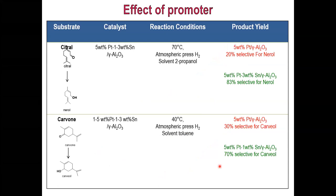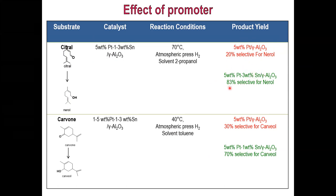This is an example of the promoter effect: in the conversion of citral to nerol, the catalyst is platinum with tin on alumina. Using only platinum on alumina gives only 20% selectivity for nerol, but adding tin boosts activity from 20% to 83%. Similarly, for carvone, platinum alone gives 30% selectivity, but adding tin increases it to 70%. There is a clear improvement in selectivity.